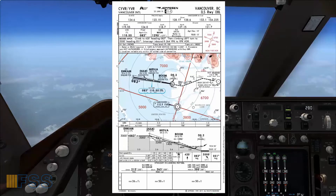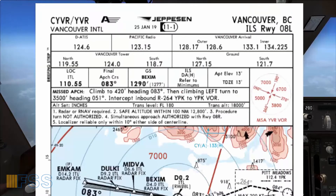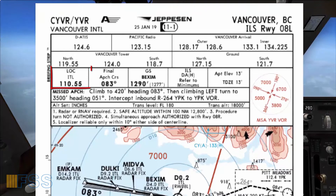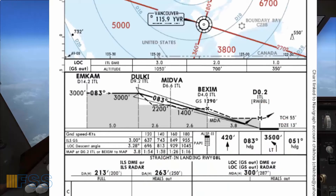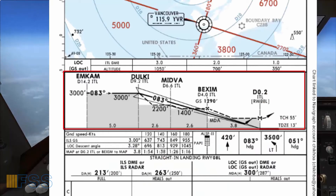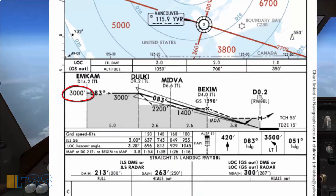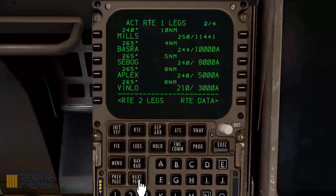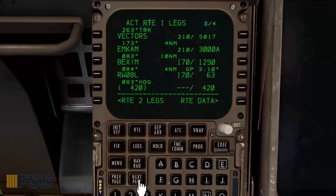Moving now to the approach — this is the ILS runway 08 left for CYVR Vancouver International. The localizer frequency is 110.55, the final approach course is 083 degrees. Moving to the profile section, I should be at 3,000 feet at MCAM. I'll step to the next page and find MCAM — here it is, 3,000 at or above, checked.